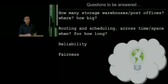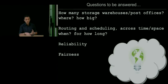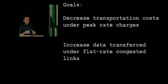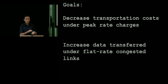If you're going to design something like this, there are still a lot of questions to answer: how many storage warehouses, where, how many post offices, how big, how to do routing and scheduling across time and space, where to store things and for how long, how to handle reliability and fairness. You can design such a system with two goals: either decrease transportation cost under a per-bit charging model, or increase data transfer rate under a flat-rate scheme where you're seeing congestion and bandwidth cannot grow elastically.